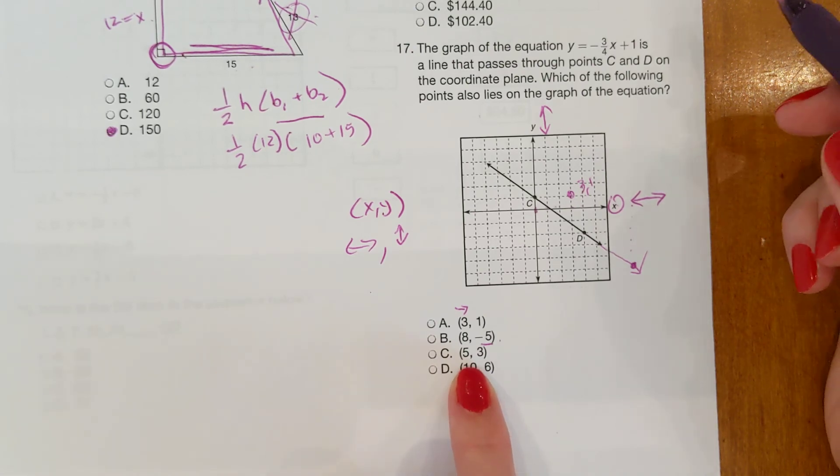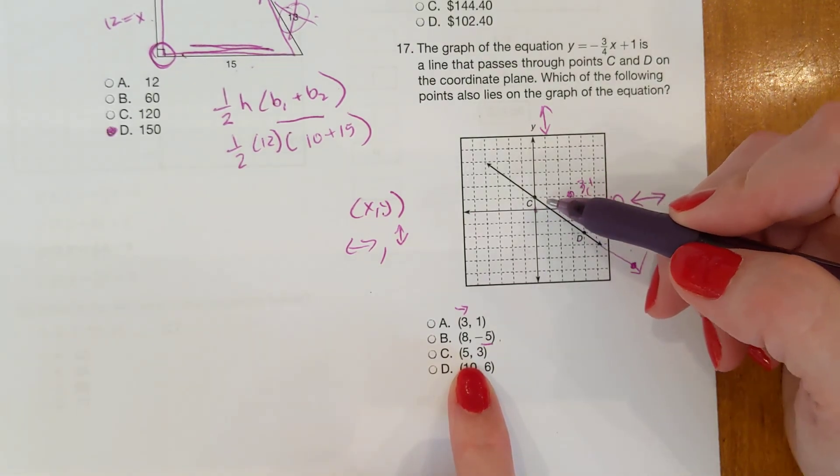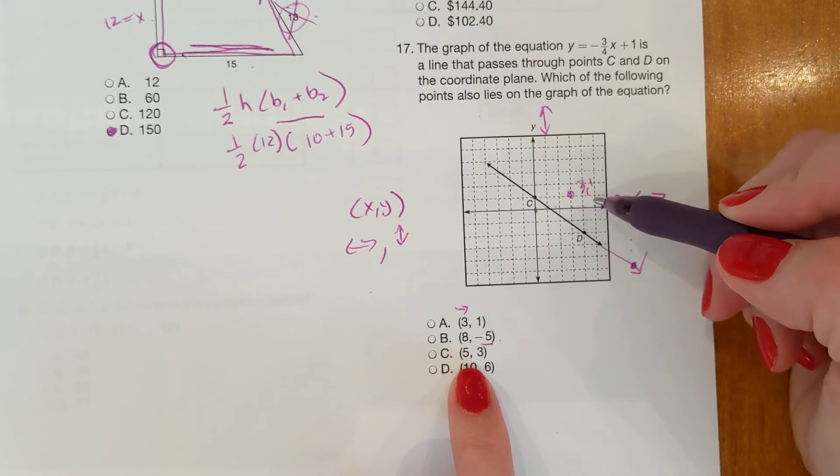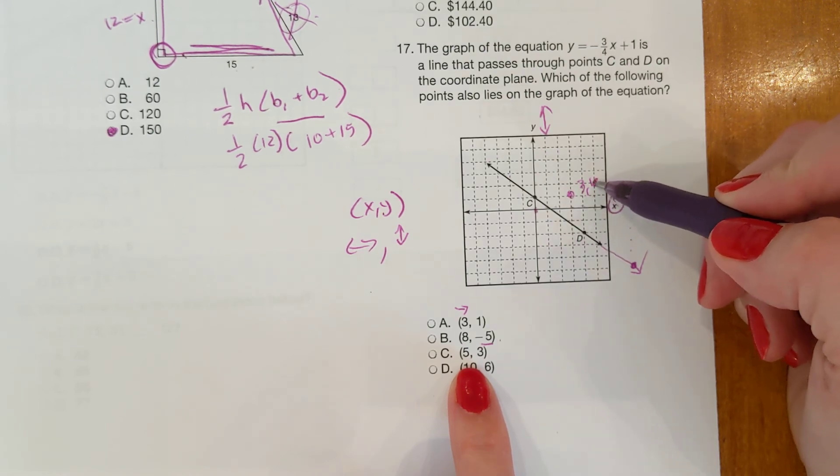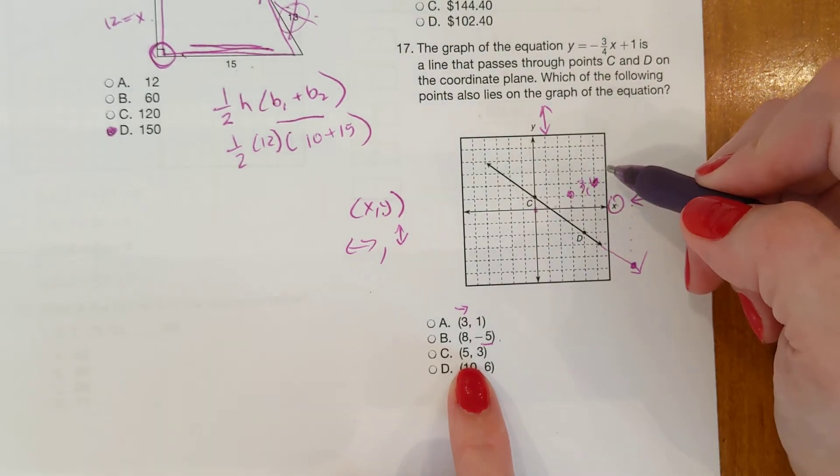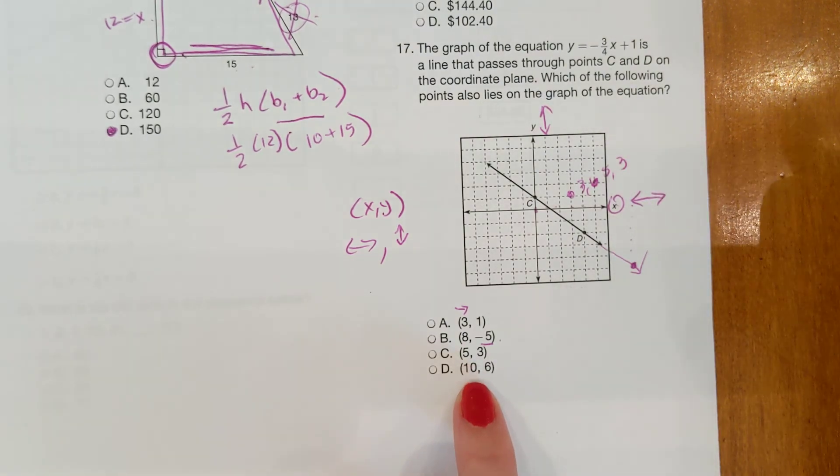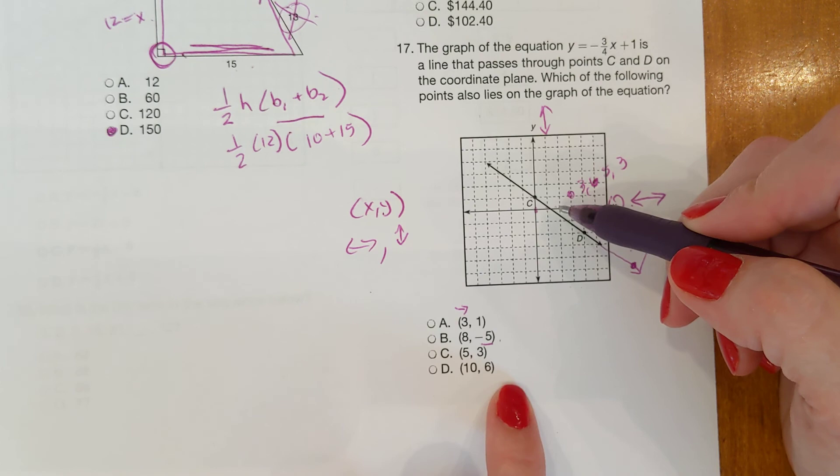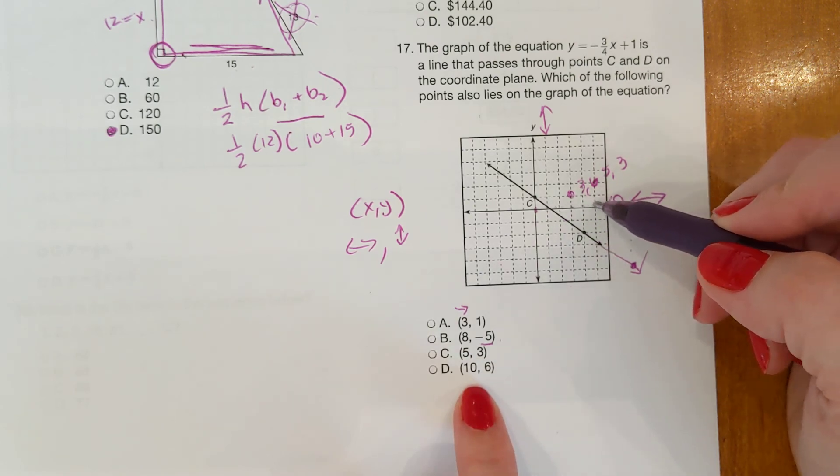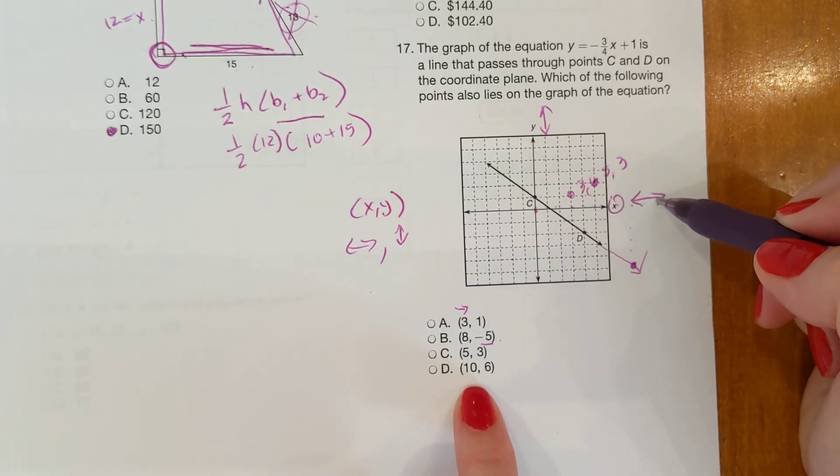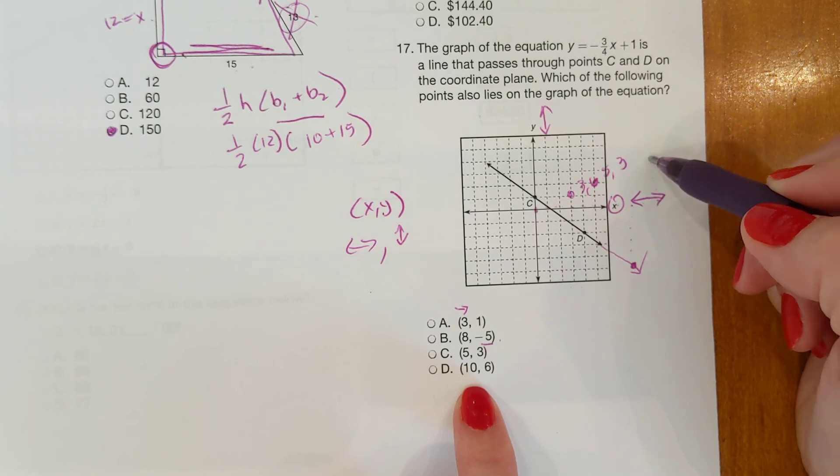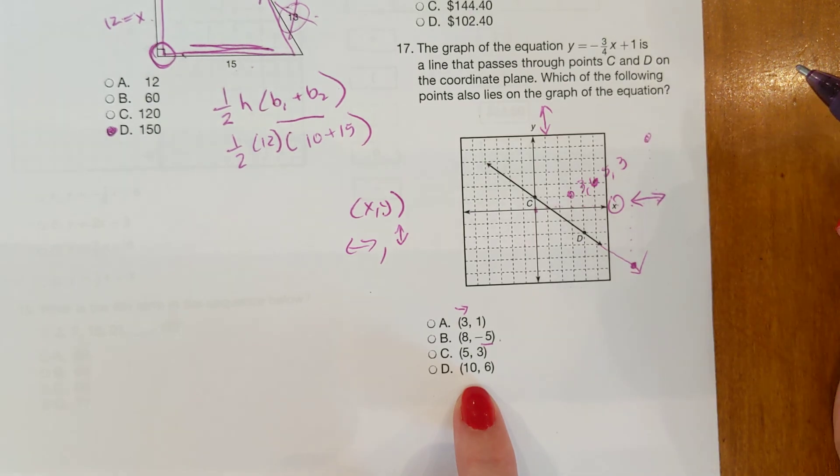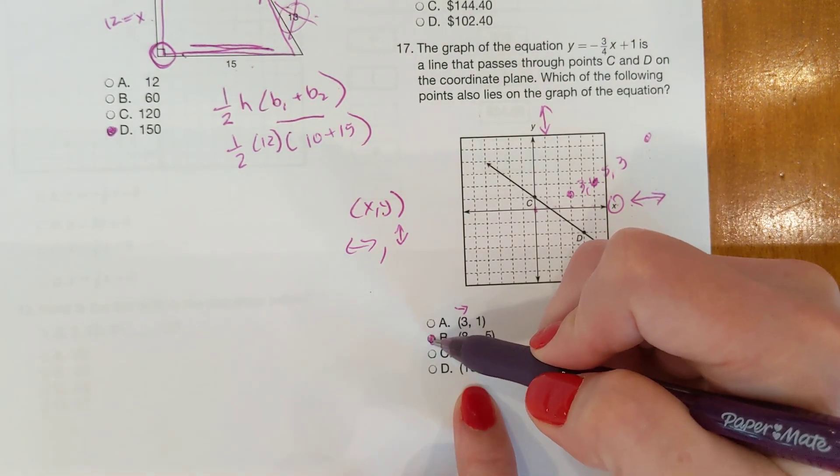Let's graph the next one. Five, three. So from zero, go right five. Two, three, four, five. And up three. So there's five, three. That is not anywhere near the line. Last of all, ten, six. So right ten and up six. One, two, three, four, five, six, seven, eight, nine, ten. And up six. One, two, three, four, five, six. That's not on the line. So it's B.